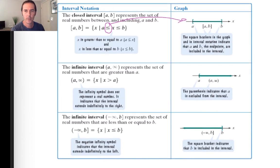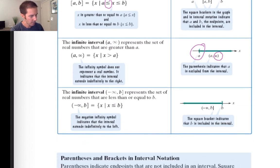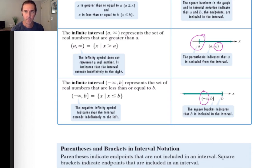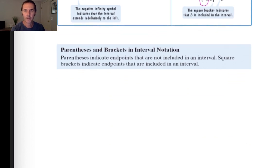Every once in a while we'll be working with half of the number line, so we will have either a parenthesis or a square bracket, and then the number line will be shaded all the way to the right or all the way to the left, which means we're using infinity or negative infinity. Both negative and positive infinity are always going to use a parenthesis, whether it's on a number line or in interval notation. So that covers parentheses and brackets in interval notation.